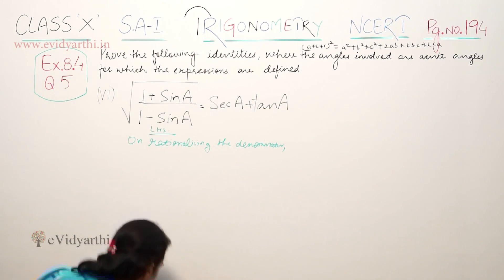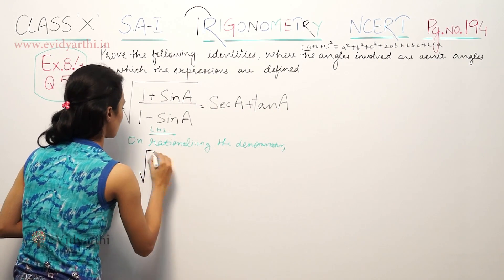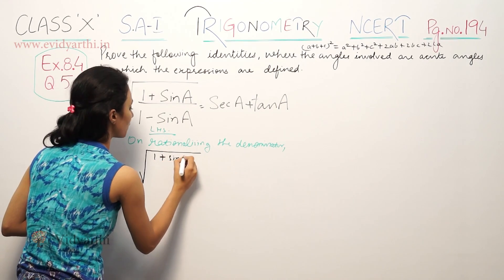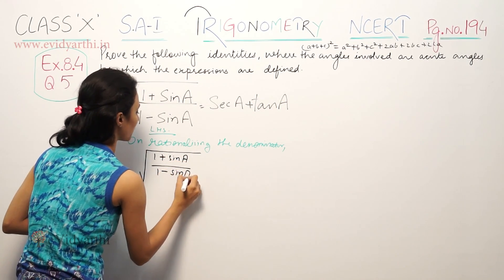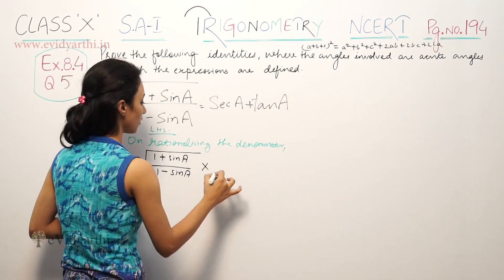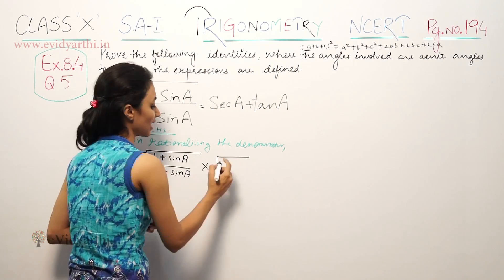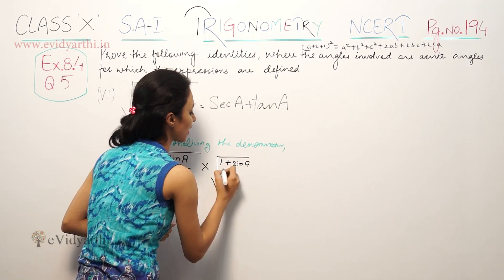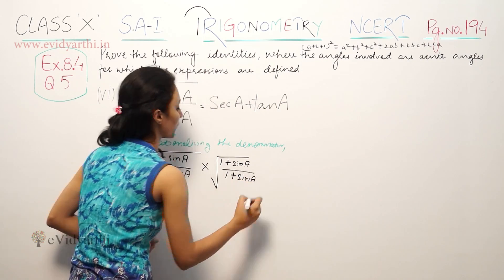So this becomes: under root of (1 plus sin A) upon (1 minus sin A). We rationalize it by multiplying numerator and denominator by (1 plus sin A).